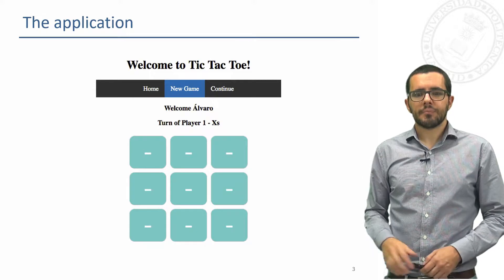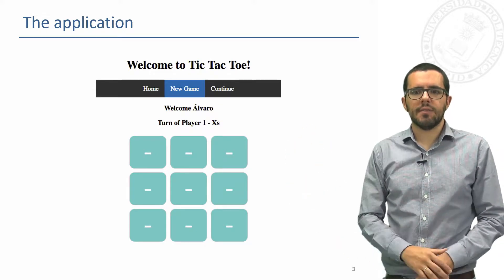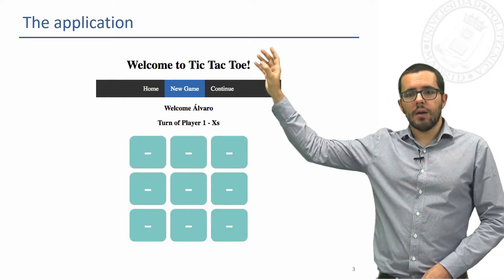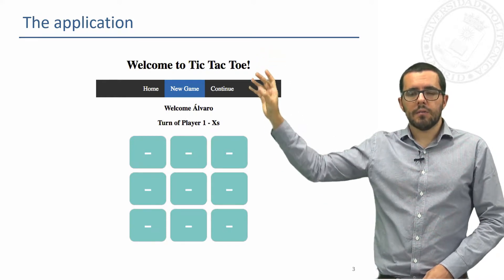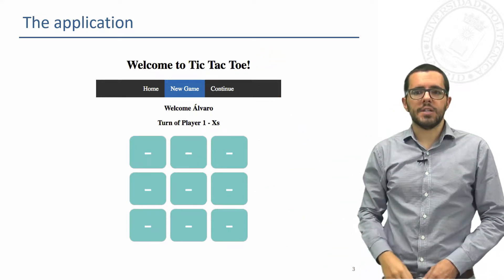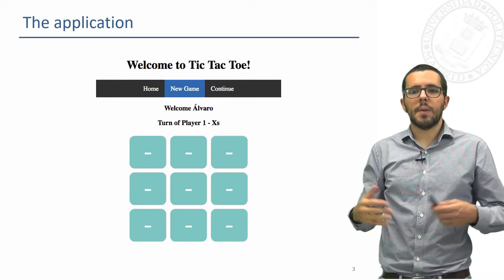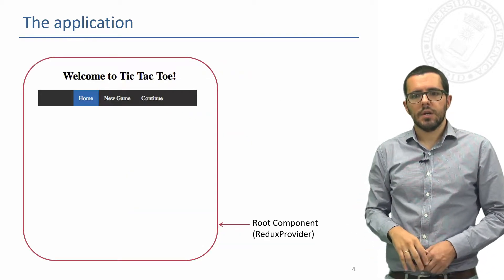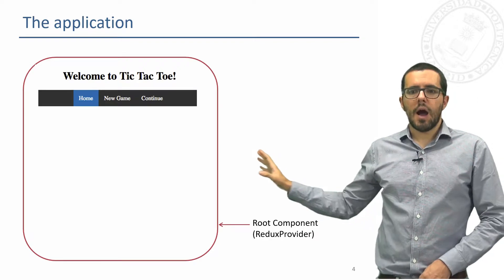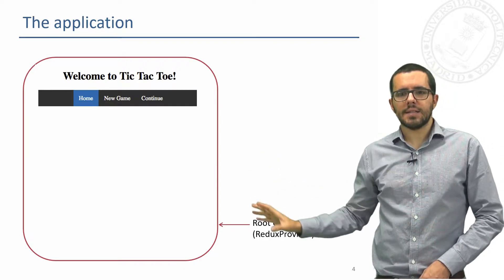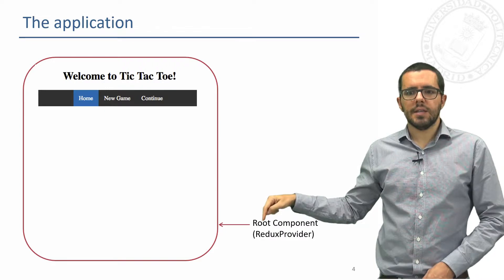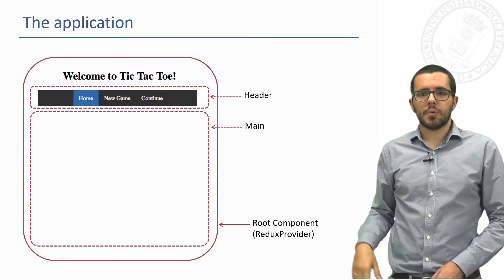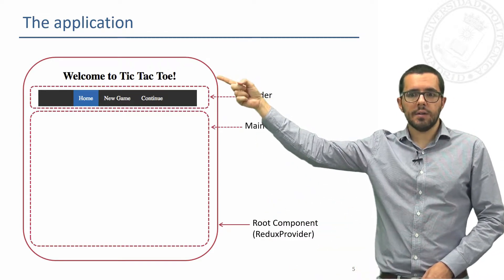Let's see the final application. We have a game, we have a header, and we have our full single page application. Let's divide it into components and see how it works. We have our root component that has everything inside — it is the Redux Provider.